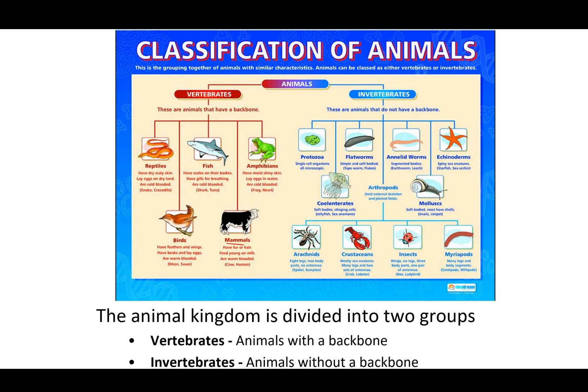Birds have feathers and wings, most can fly, they have beaks, lay eggs, and are warm-blooded — examples include wrens and swans. Fish have scales, gills for breathing, and are cold-blooded — examples include sharks and tuna. Reptiles and amphibians are the ones most people mix up. Amphibians have moist, slimy skin, lay eggs in water, and are cold-blooded — frogs, newts, and toads. Reptiles have dry, scaly skin, lay eggs on land, and are cold-blooded — snakes and crocodiles. All of these organisms have a backbone.